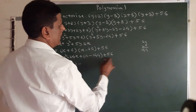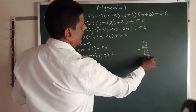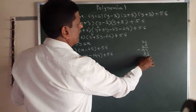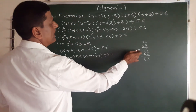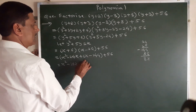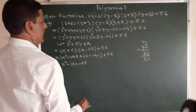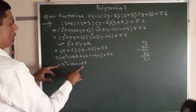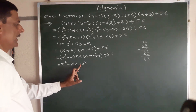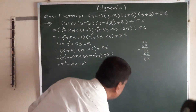Minus 144 plus 56 means we subtract: 144 minus 56 gives 88, with a minus sign because 144 is minus. So we get minus 88. The expression simplifies to x squared minus 18x minus 88.